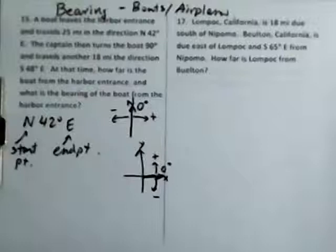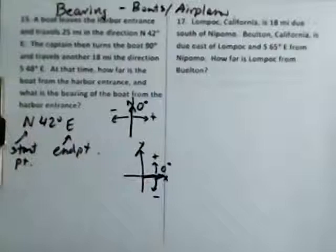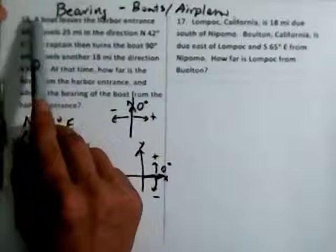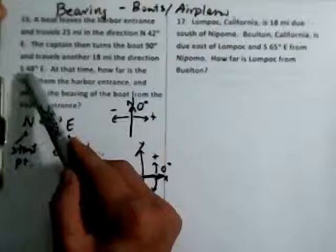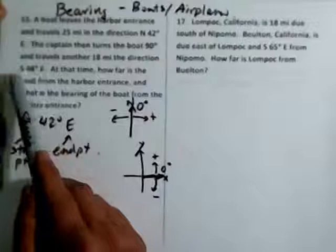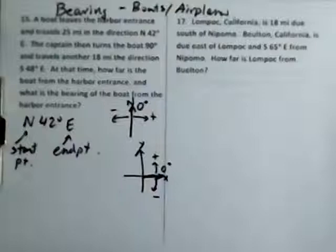We're going to do this on a separate piece of paper. Draw it out on a separate piece of paper - we don't have enough space here because it's a pretty big problem. Let's just read it first. A boat leaves the harbor 25 miles in the direction north 42 degrees east. The captain then turns the boat 90 degrees and travels another 18 miles. At this time, how far is the boat from the harbor entrance? What is the bearing of the boat from the harbor entrance? I'm going to use a new piece of paper for this one.